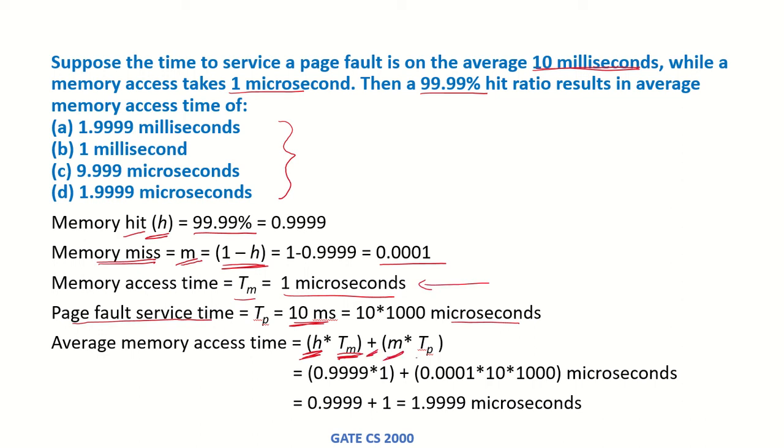So 0.9999 times 1, which is the time required to access the memory, plus whatever is the miss times the page fault service time, which is 0.0001 times 10 times 1000 microseconds. If we add that up, it is 0.9999 plus 1, equals 1.9999 microseconds. So this is the answer.